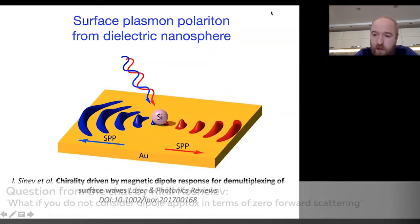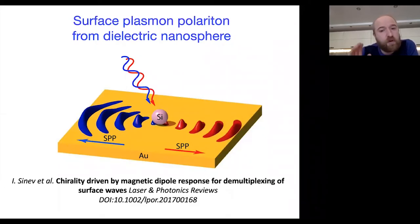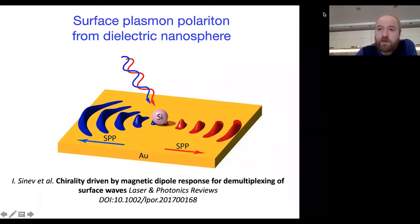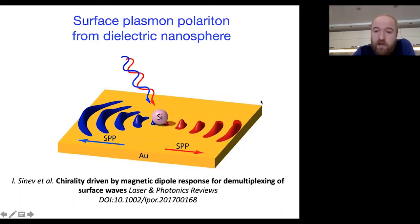A question: what if we go beyond the dipole approximation? If we account for higher-order multipoles, it is possible to realize higher directivity at shorter wavelengths. Beyond the dipole approximation, the analytical description becomes quite cumbersome, requiring interference of many components. The classical optical theorem is broken due to the substrate — total scattering is contributed not only by SPP excitation but also by scattering into free space; here we consider only the SPP channel.